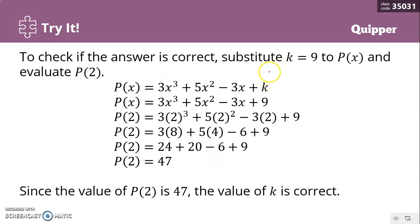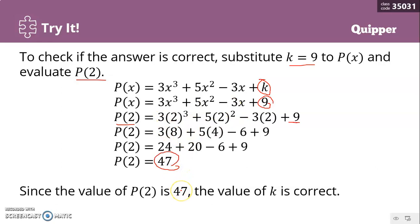To check if the answer is correct, we substitute k equals 9 back into P of x and evaluate P of 2 to see if it really equals 47. P of x equals 3x cubed plus 5x squared minus 3x plus 9. Evaluating P of 2: 3 times 2 cubed plus 5 times 2 squared minus 3 times 2 plus 9, which is 3 times 8 plus 5 times 4 minus 6 plus 9, and that equals 47. Since P of 2 equals 47, the value of k is confirmed correct.